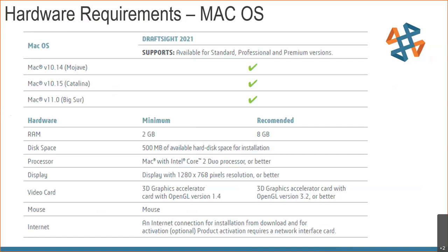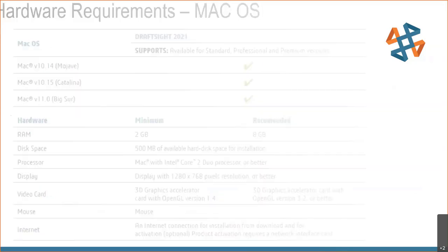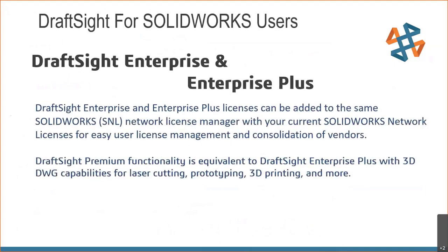And here's for the Mac. There are different versions of DraftSite: DraftSite Enterprise and Enterprise Plus. Either of the enterprise versions allows you to do network licensing — you can host it on the SolidWorks SNL, or if you're not a SolidWorks customer, you can use what they call a DSLS — a DraftSite SNL essentially — which is a DESTO system license manager. If you already have a SolidWorks SNL, you can load your licenses on it as long as the SNL is upgraded to 2021.